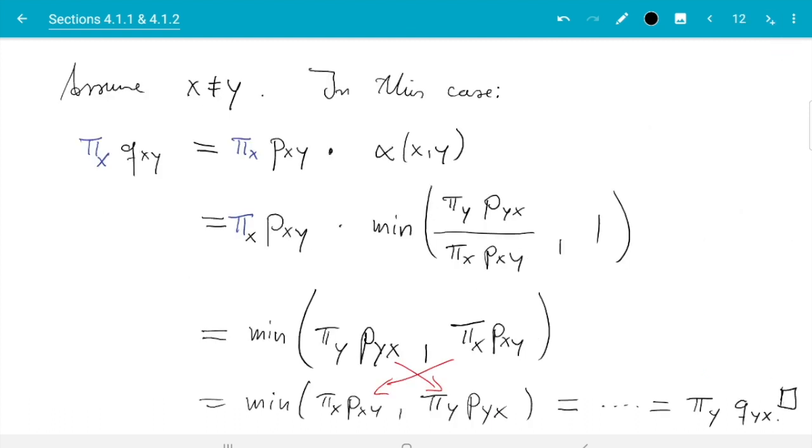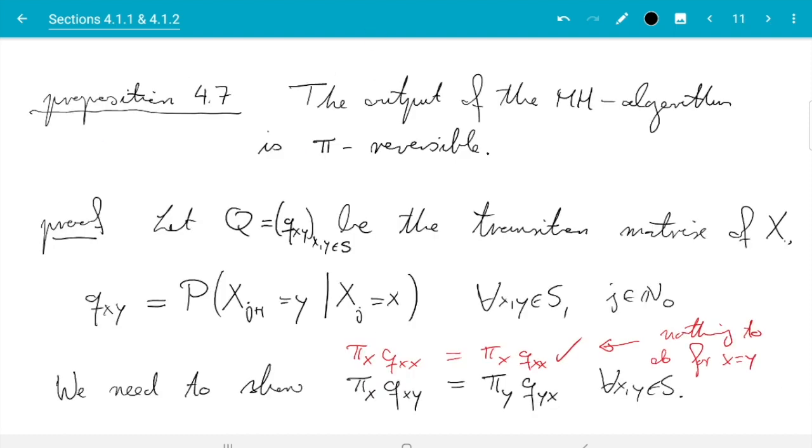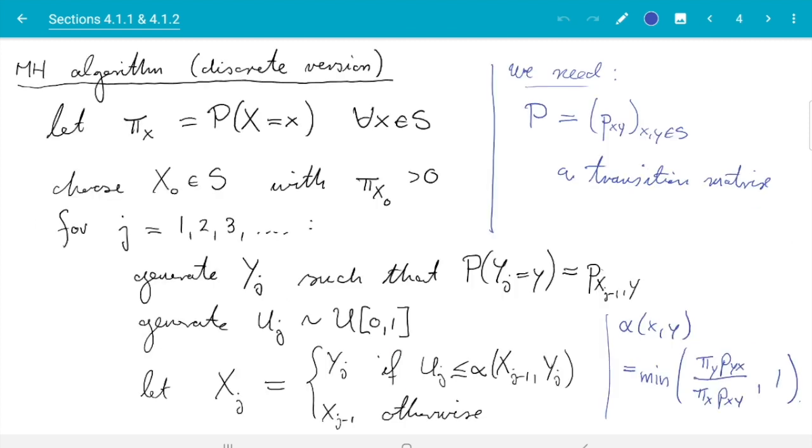So let's draw a little end of proof box here. And I already said why we did this. Once we have established that's true, we have just shown it's pi reversible. Then we can conclude that pi is a stationary distribution of X. And that is really what we wanted here.